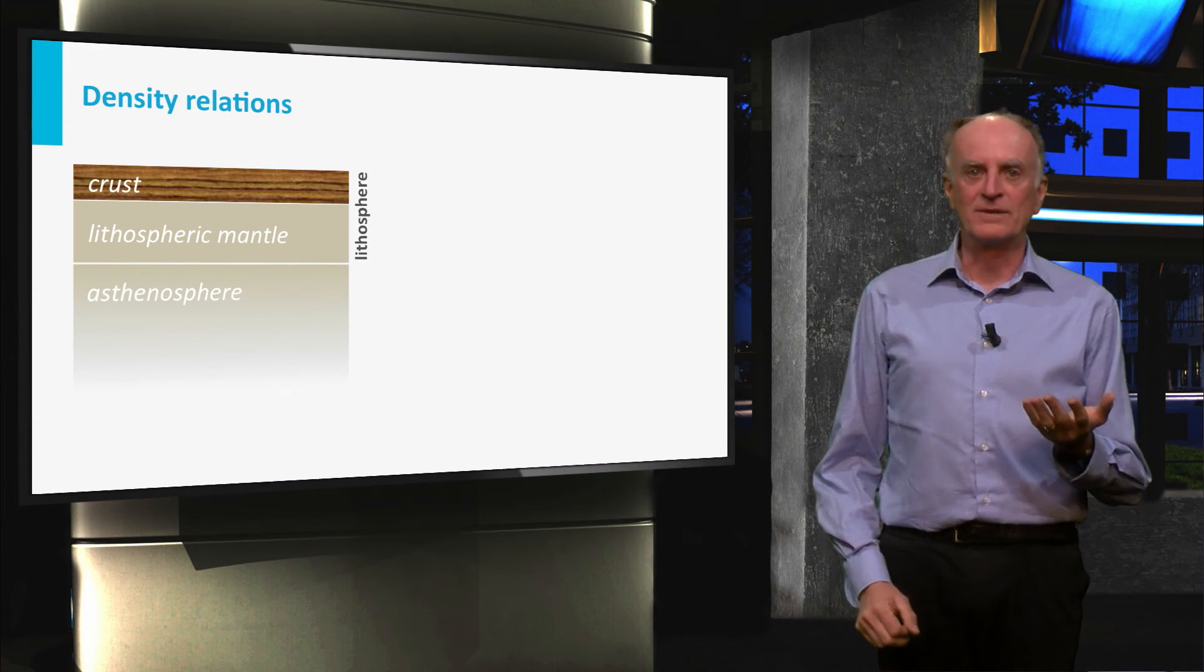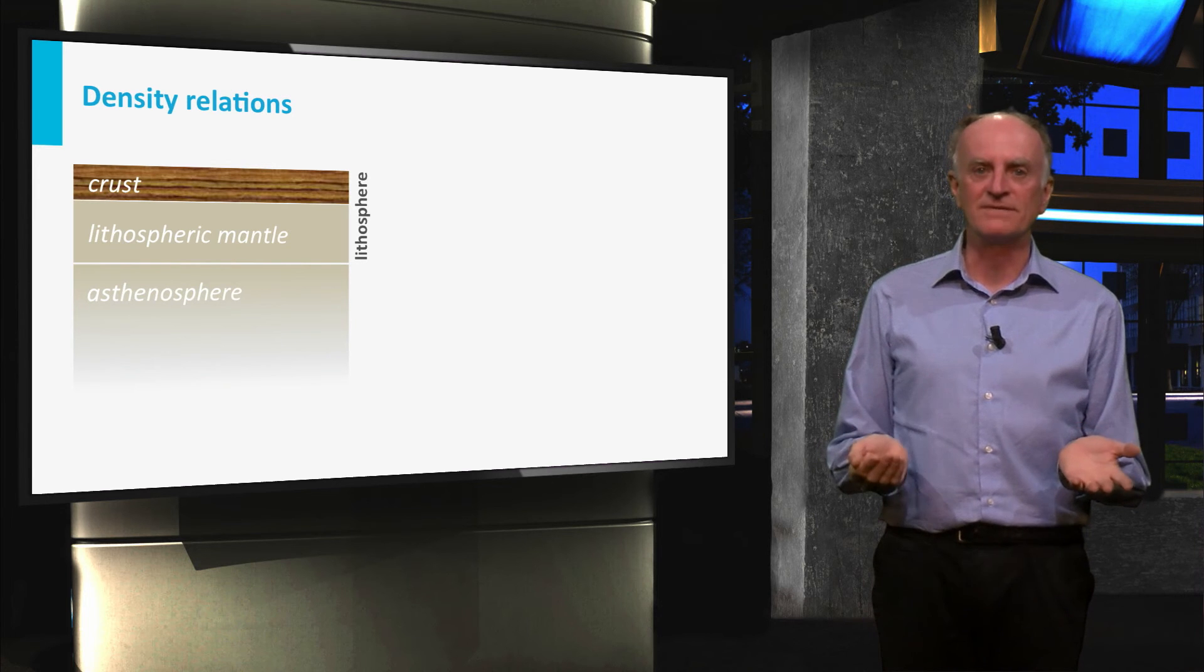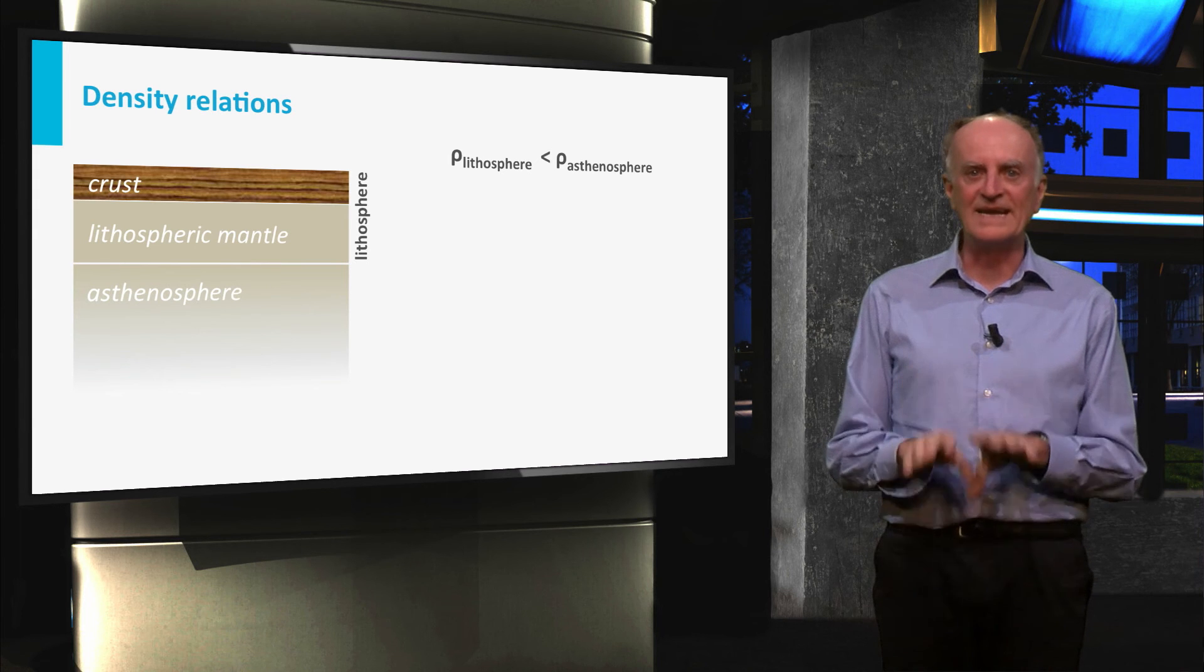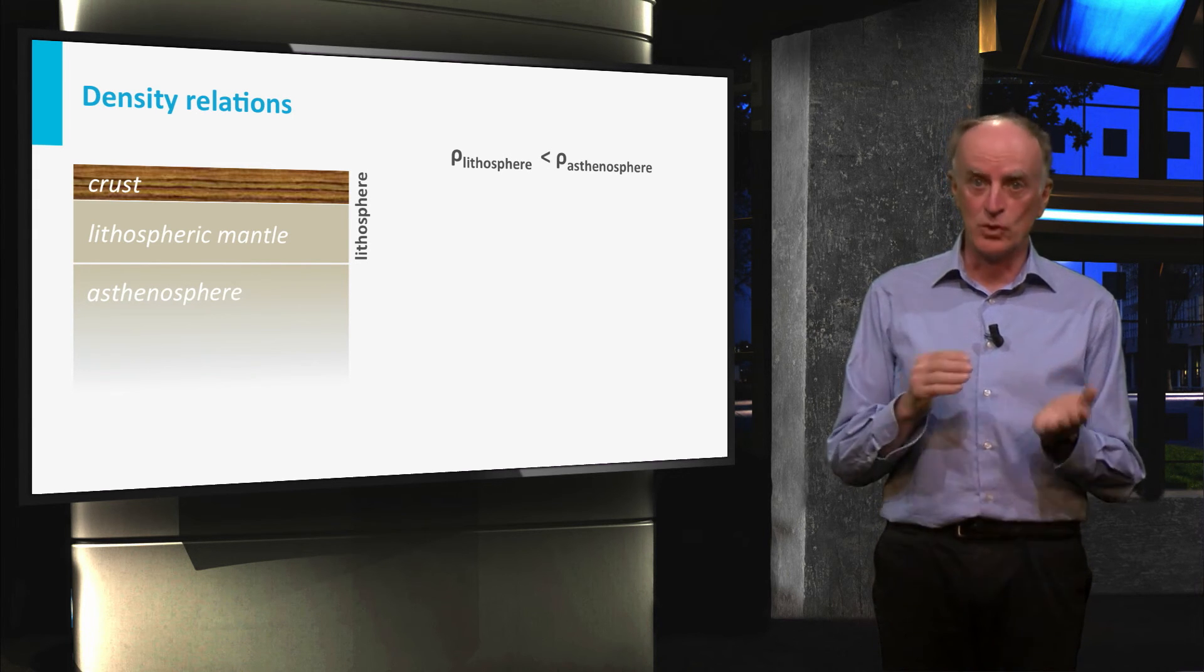Let us look at the density of the floating block, the lithosphere, and of the displaced fluid, the asthenosphere. The simple fact that we are standing on the lithosphere implies that its average density is lower than that of the asthenosphere.